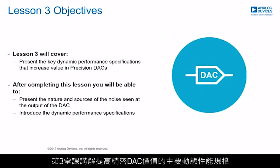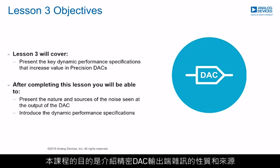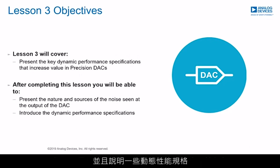This lesson three will cover the key dynamic performance specifications that increase value in precision DACs. The objectives of this lesson are to present the nature and the sources of the noise seen at the output of a precision DAC, and an introduction of the dynamic performance specifications that might become a pain in certain applications.